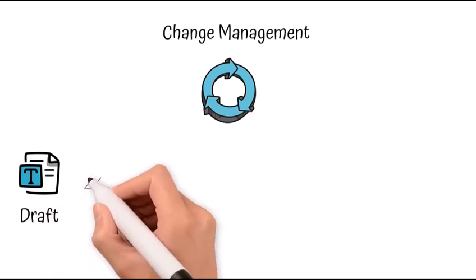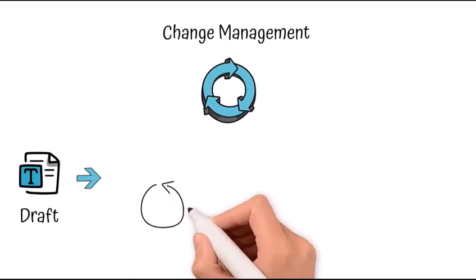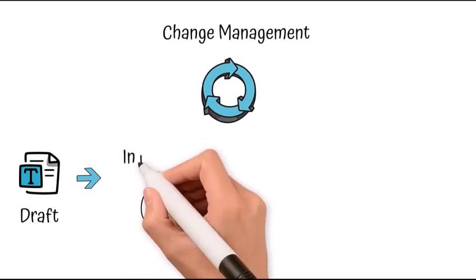Draft - it is the status where task is created. In progress - it is the status where member is working on the task.